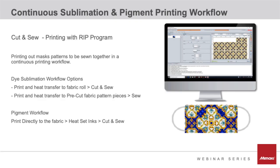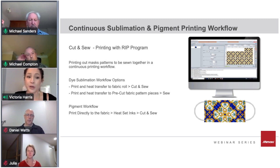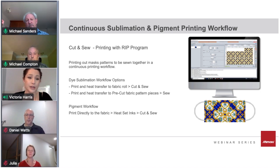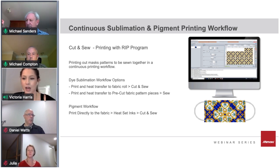For your continuous sublimation and pigment printing workflow, you start by nesting your files in the RIP software, choose a color profile, and decide quantity. For dye sublimation transfer, you have two options: print and heat-transfer to a fabric roll then go into cut and sew, or print and heat-transfer to pre-cut pattern pieces then go into sew production. For the pigment workflow, you print directly onto the fabric, heat-set the inks, and then go into cut and sew production.